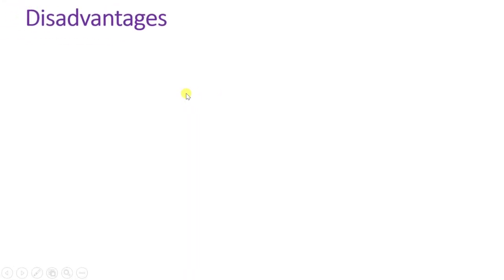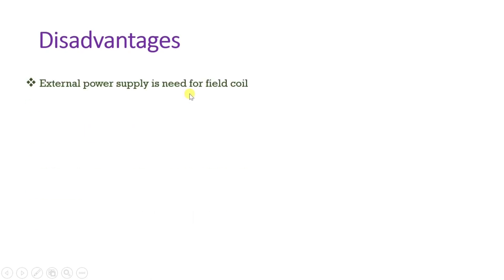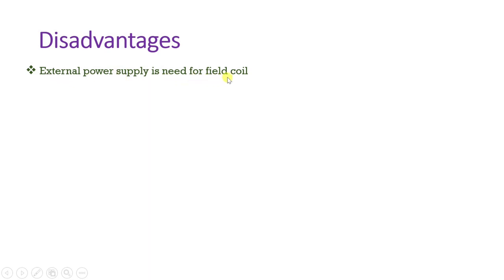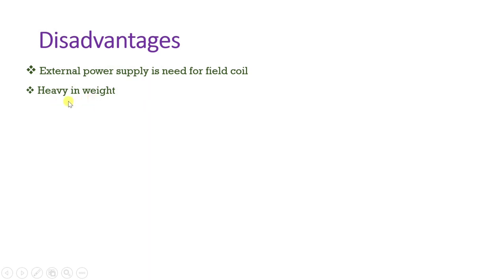Now the disadvantages: the first disadvantage is that it requires an external power supply to the field coil — we need an external biasing power supply to the magnet, which is not required in the case of a permanent magnet loudspeaker. In the field coil loudspeaker we need a fixed external power supply given to the field coil. Also, since we use an electromagnet, it is heavy in weight, so the resultant weight of the speaker increases. And the cost is very high. So basically cost is high, weight is very high, and we need an external power supply — these are the disadvantages.